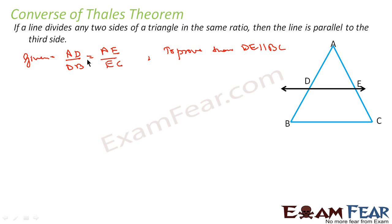In the earlier Thales theorem, we were given that DE is parallel to BC and had to prove that AD by BD equals AE by AC. In this converse case, it is the other way around: we are given that AD by BD equals AE by EC, and we have to prove that DE is parallel to BC.